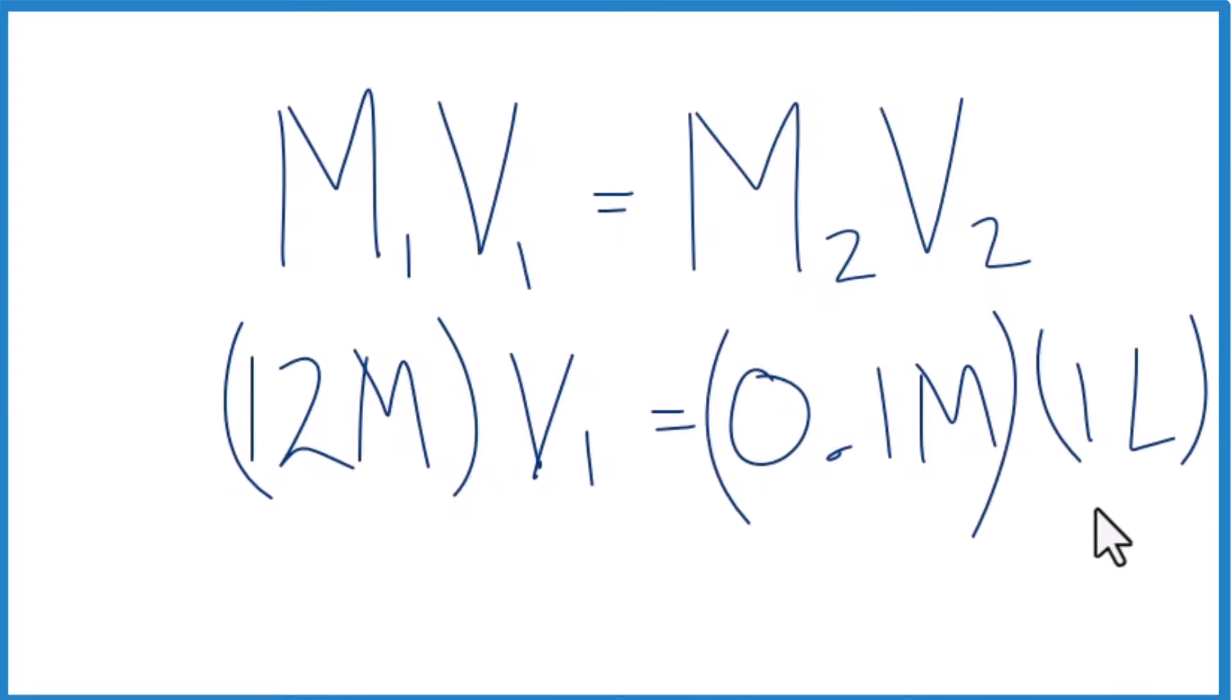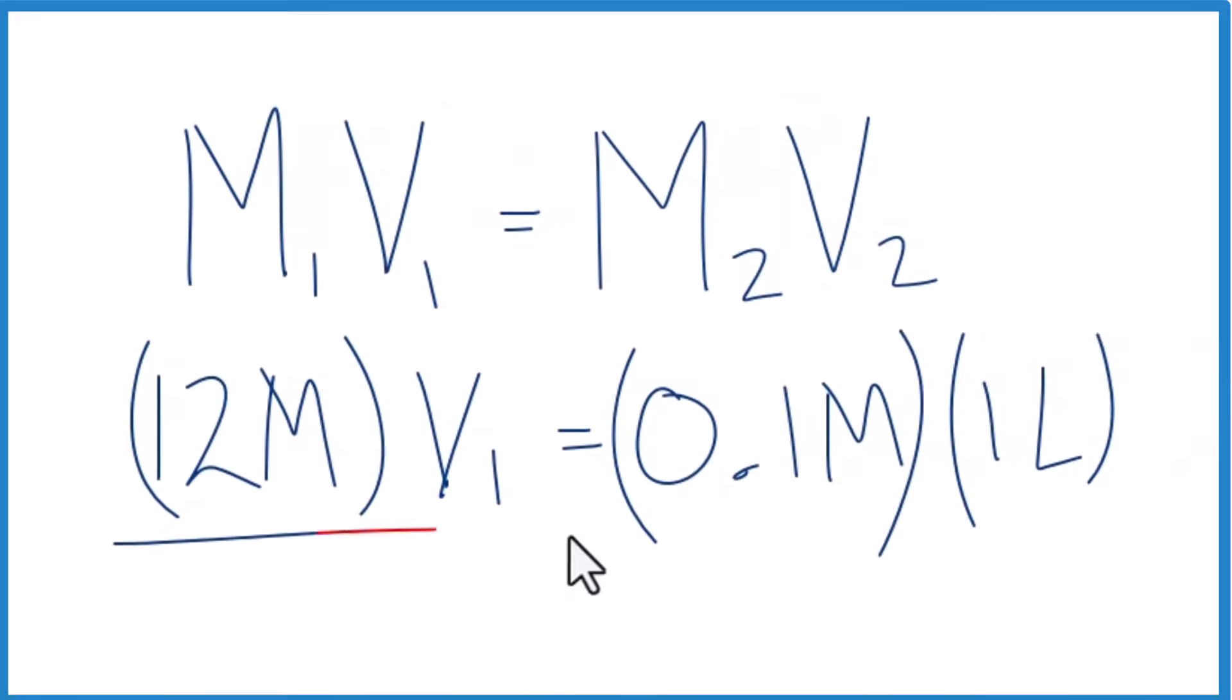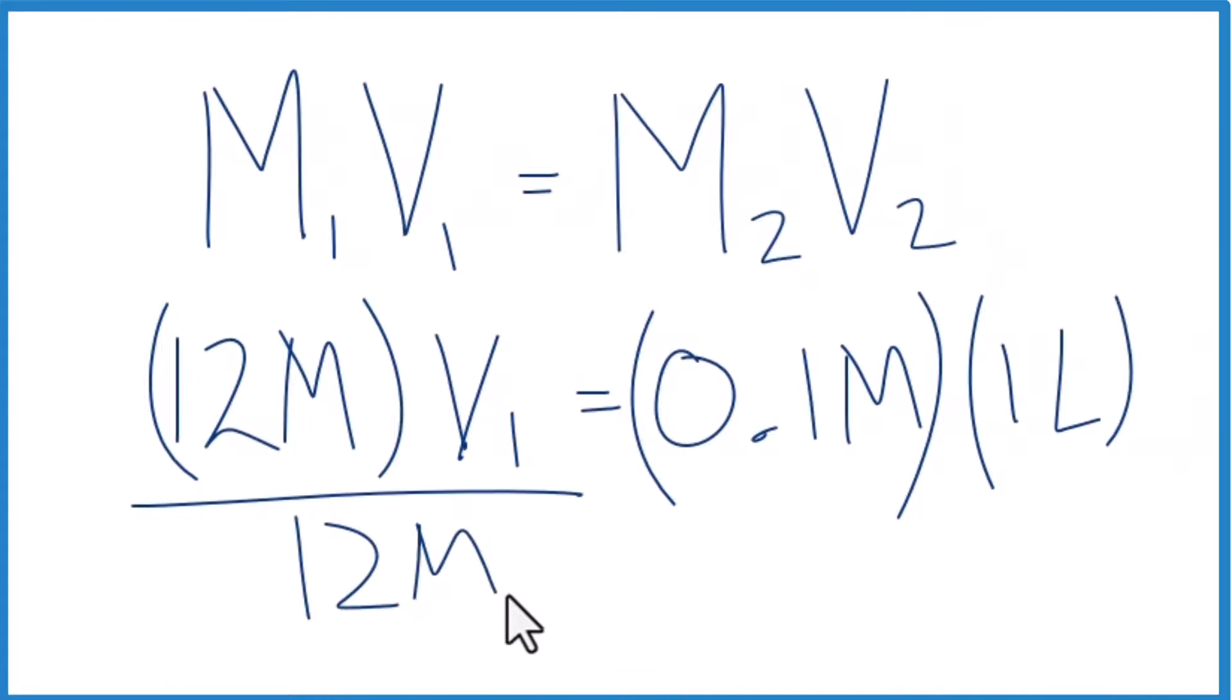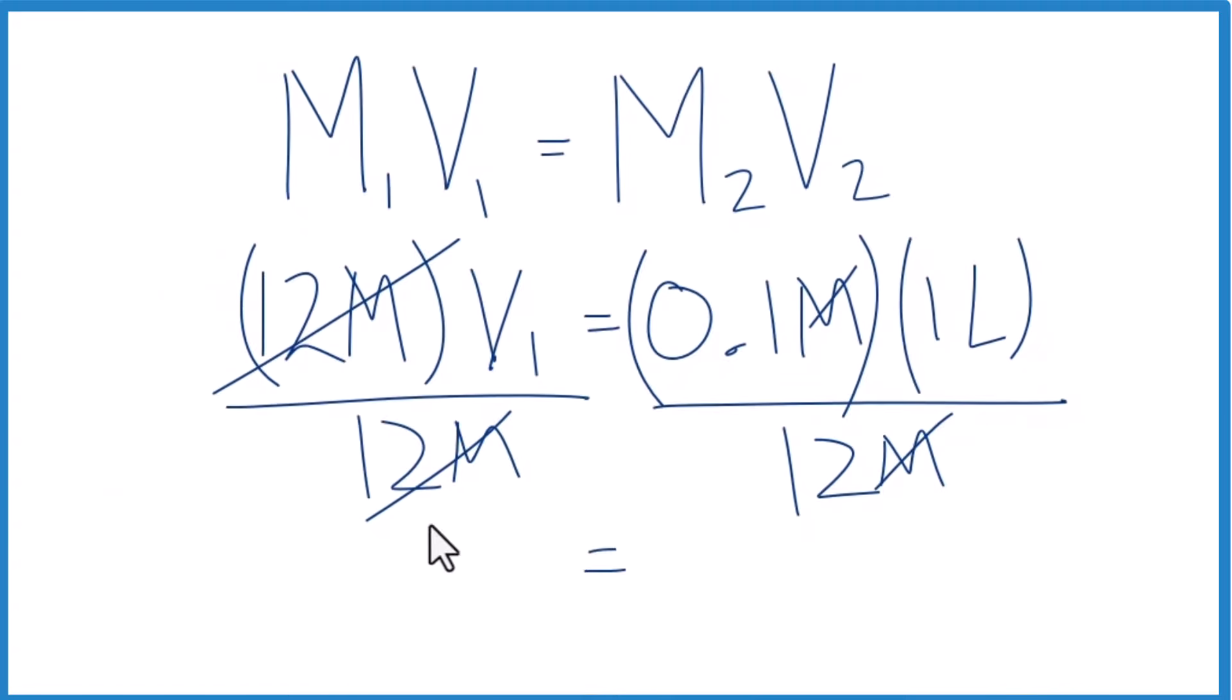So now we just do the math. We'll divide both sides by 12 molar. Molar cancels out. So on the top and the bottom, we'll be left with liters. So 0.1 divided by 12, that'll give us V1.